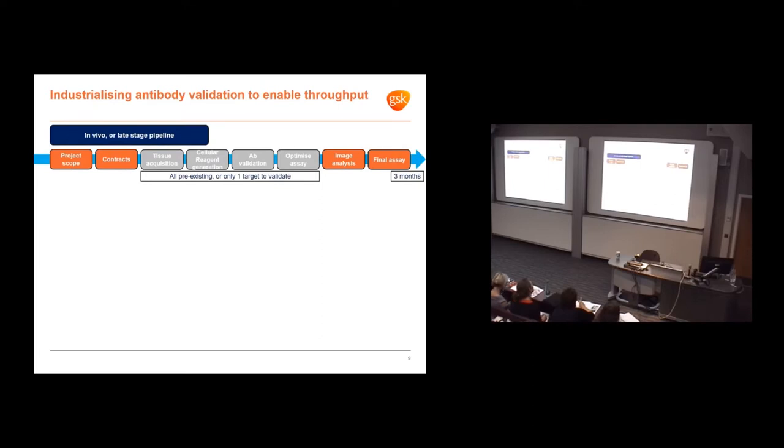Before Target Sciences was formed, our group supported late-stage projects with in vivo models. The great thing was tissue was supplied to us from in vivo models. Cellular reagents were generally available because this was a late-stage project with huge project teams. Antibody validation was probably already done with one or two markers, and the assay was already optimized. We could whiz through these experiments in a few months because a lot of these things were pre-existing or we only had one target to validate.